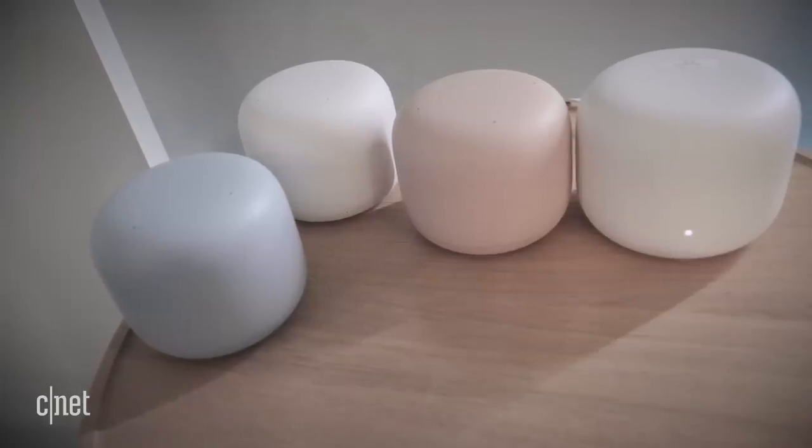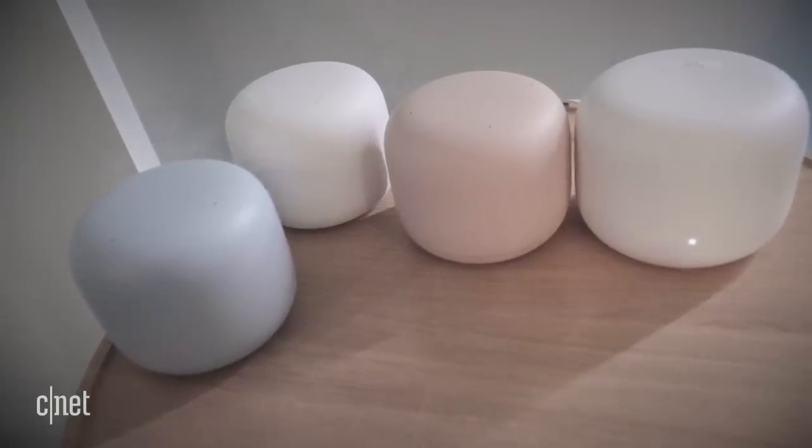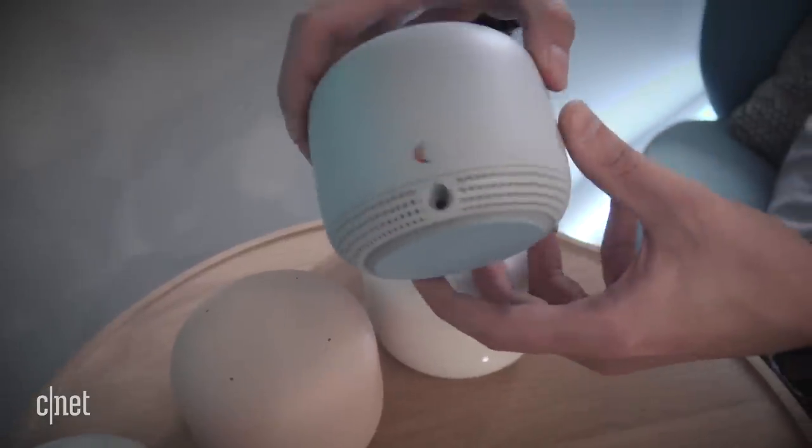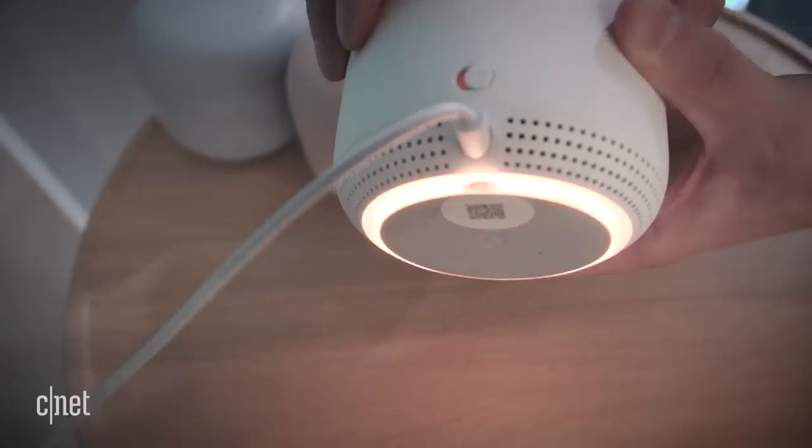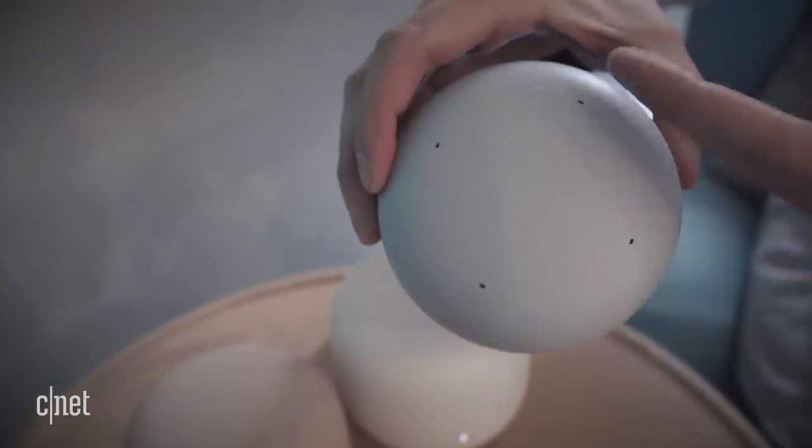The neat thing about these Google Nest Wi-Fi points is that aside from coming in three colors—snow, mist, and sand—each one actually doubles as a Google Assistant speaker. You've got the mute switch there, the speaker grill at the bottom, and microphone holes at the top.